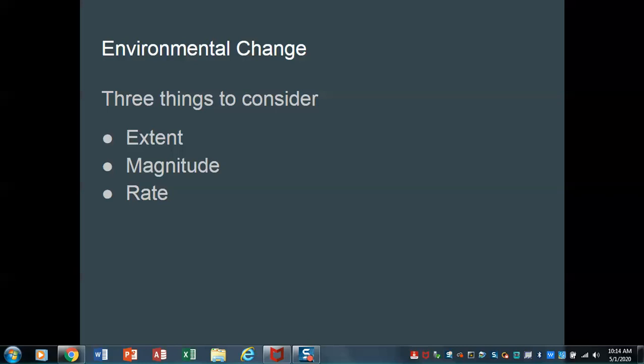And then, lastly, we talk about rate. Rate means how quickly the change occurs. And again, we often think about rate because many systems can, if the change occurs slowly, the systems move or evolve to accommodate that change.